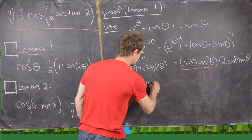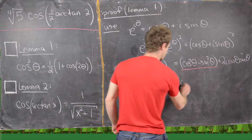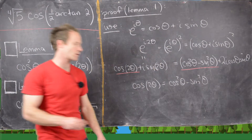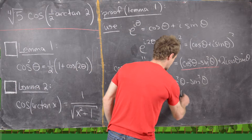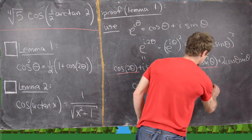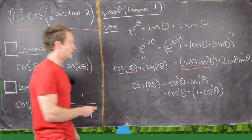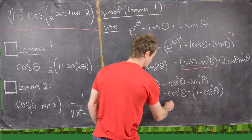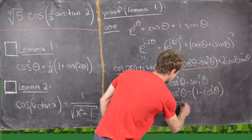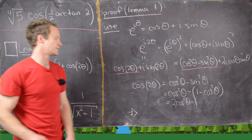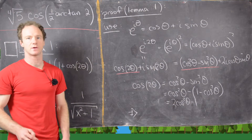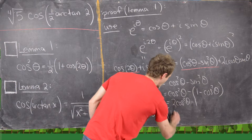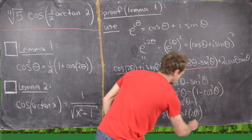So we have cosine of 2θ equals cosine squared θ minus sine squared θ. We can replace sine squared θ with 1 minus cosine squared θ. Combining cosine squared θ on the right-hand side, we get two cosine squared θ minus 1. Notice we have cosine 2θ equals two cosine squared θ minus 1, and solving for cosine squared θ gives us one-half times (1 + cosine 2θ), as desired.